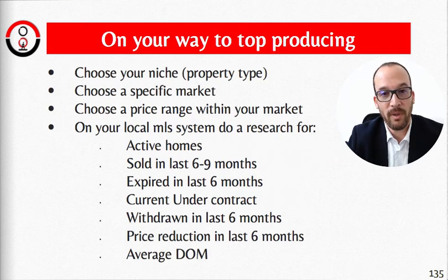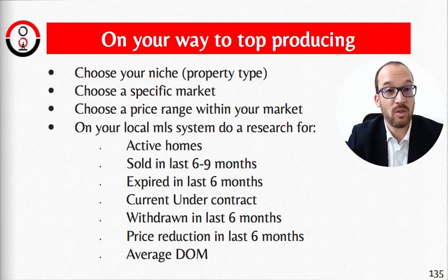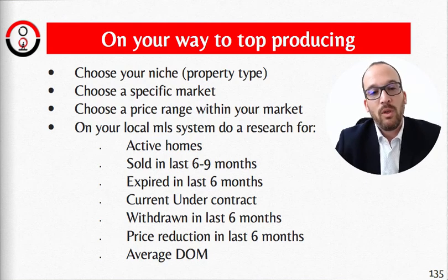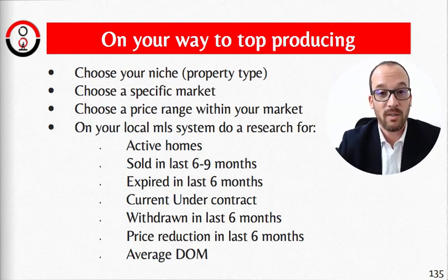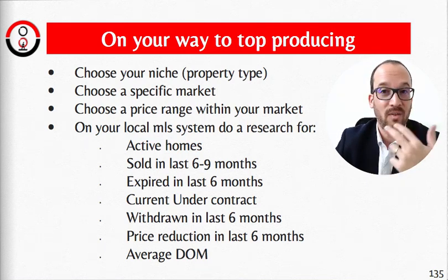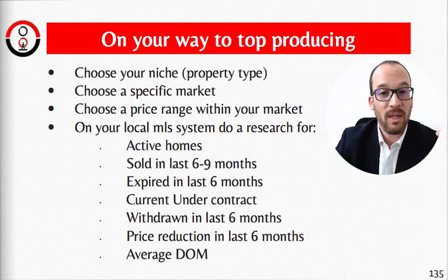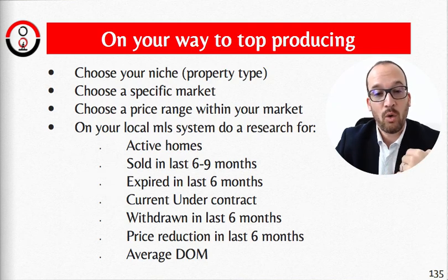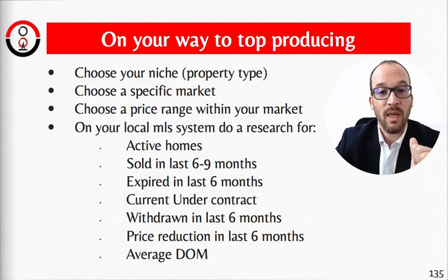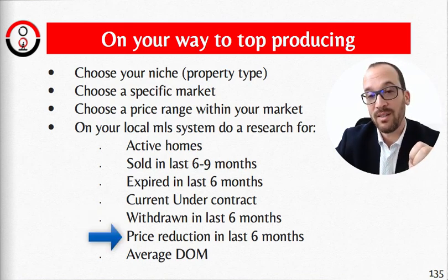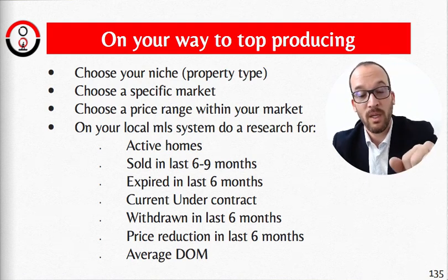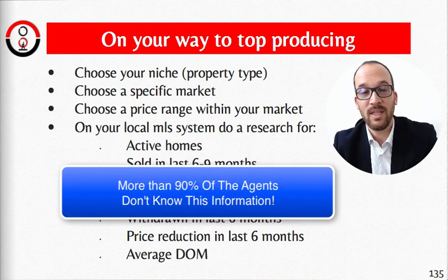On your way to top producing, choose your niche — a specific property type and neighborhood. For example, brand new construction in East Greenwich in the $750,000 to $1 million price range. On your local MLS, search for: active homes, sold in the last six to nine months, expired in the last six months, current under-contract listings, withdrawn listings in the last six months, price reductions in the last six months, and average days on market. Know all this when doing a CMA.